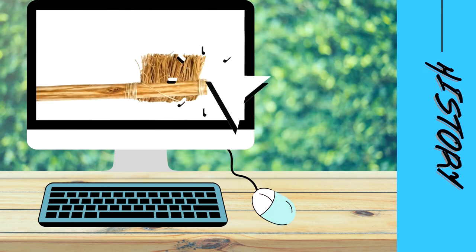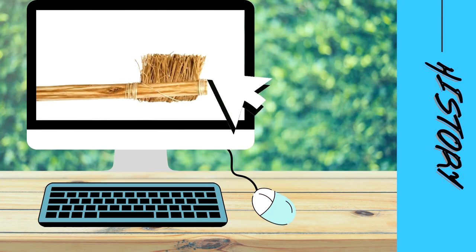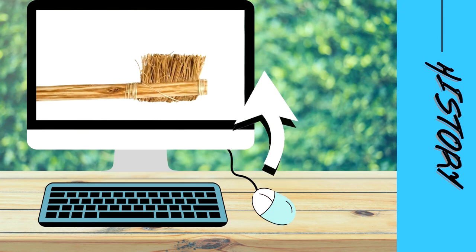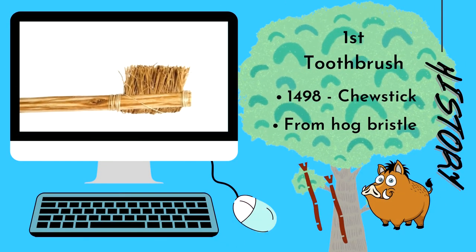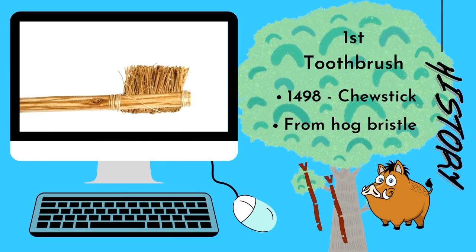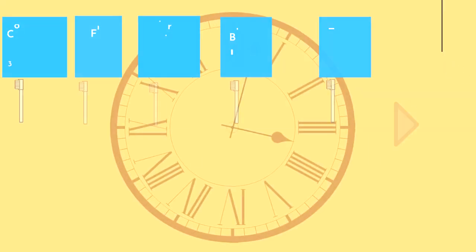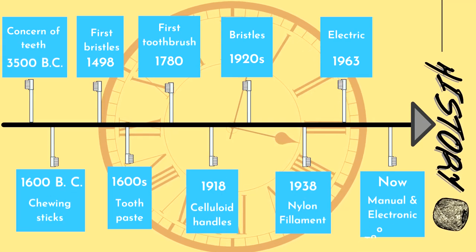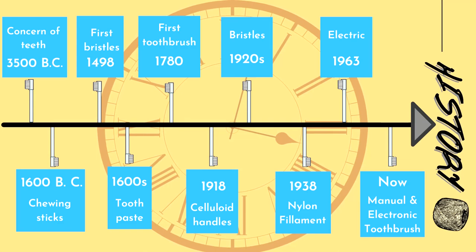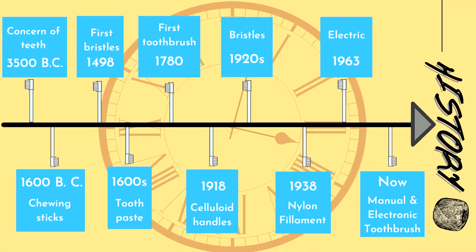This is how toothbrushes from the old times looked — isn't that magnificent? Let's go through the history of these magic sticks and their evolution. The first toothbrush was made in 1498, and back then they used hog's fur to make the bristles. Looking at the timeline: human civilization began caring for teeth as far back as 3500 BC using chewing sticks or miswak, and bristles were founded around 1600 BC.